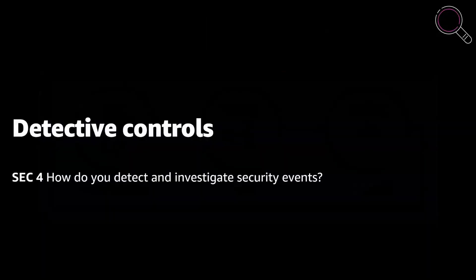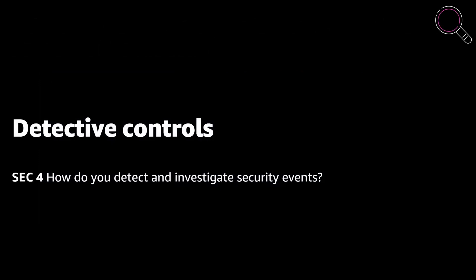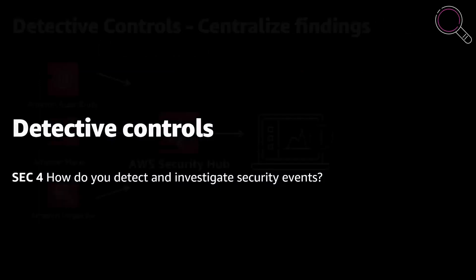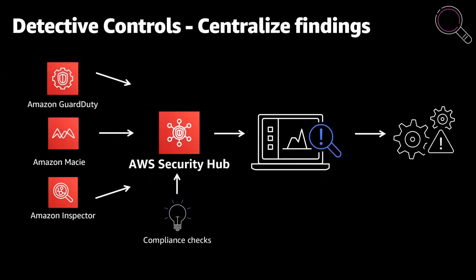Let's move on to detective controls. Detective controls are used to identify a potential security threat or incident. To centralize findings, it is recommended you start with AWS Security Hub, a security posture management service that performs security best practice checks, aggregates alerts, and enables automated remediation. Security Hub takes alerts from a number of sources including Amazon GuardDuty, a threat detection service that monitors AWS accounts for malicious activity; Amazon Macie, a fully managed data security and privacy service that uses machine learning to discover and protect sensitive data in AWS; and Amazon Inspector, a service that continuously scans AWS workloads for software vulnerabilities and unintended network exposure.